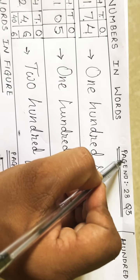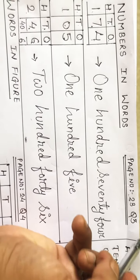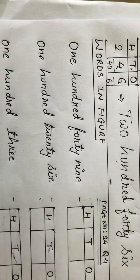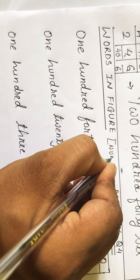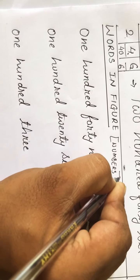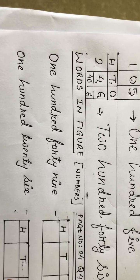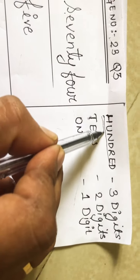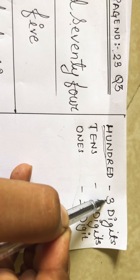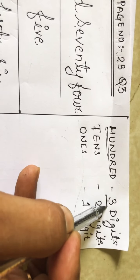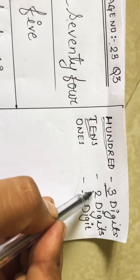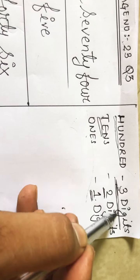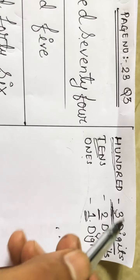This one is your homework — page number 23, question number three in your workbook, do it yourself. Now see next: write in figures — figure means the number is given in words and you have to write it in numbers. Remember this: jab bhi aapko words se figure mein likhna ho, if it has 'hundred' then there should be three digits in that number. If it is tens then two digits, if ones then one digit.